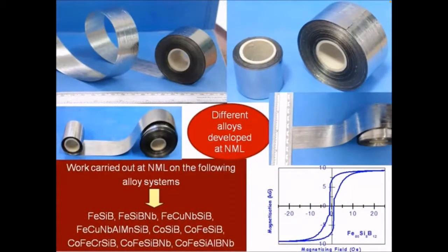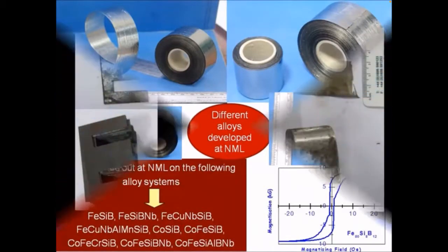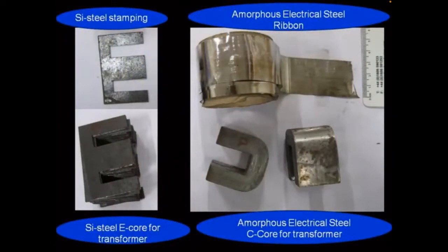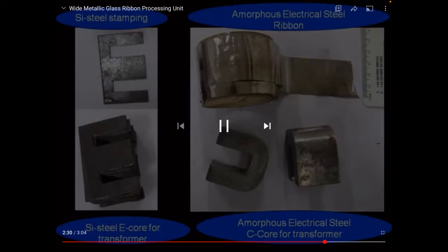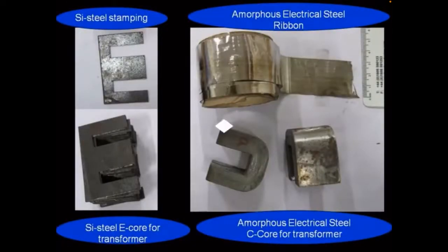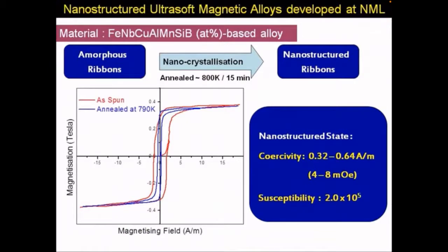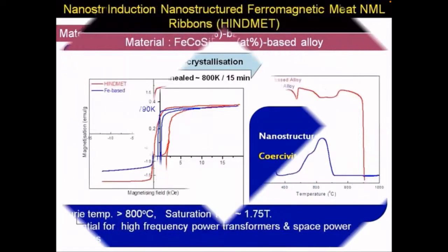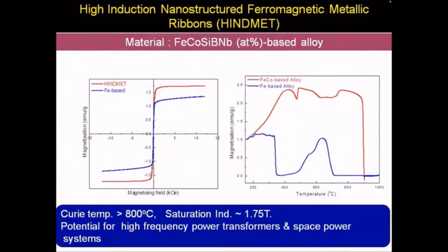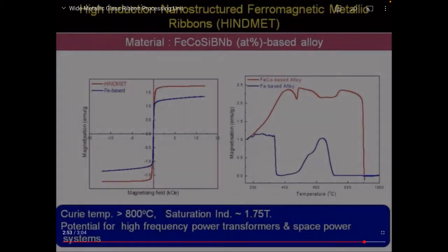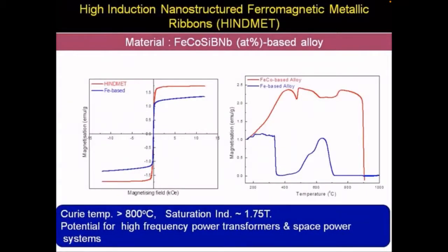A wide range of amorphous and nanostructured alloys for multiple applications were prepared. The amorphous electrical steels can be used to make C-cores for transformers, while silicon steels are used as E-type transformer cores. High induction iron-cobalt based alloys called Hindmet were developed, having a Curie temperature greater than 1000 Kelvin and saturation induction of 1.75 Tesla, applicable in high-frequency power transformers and space power systems.